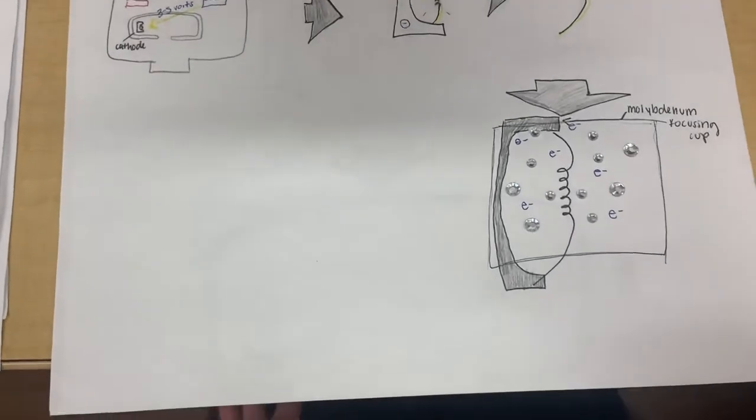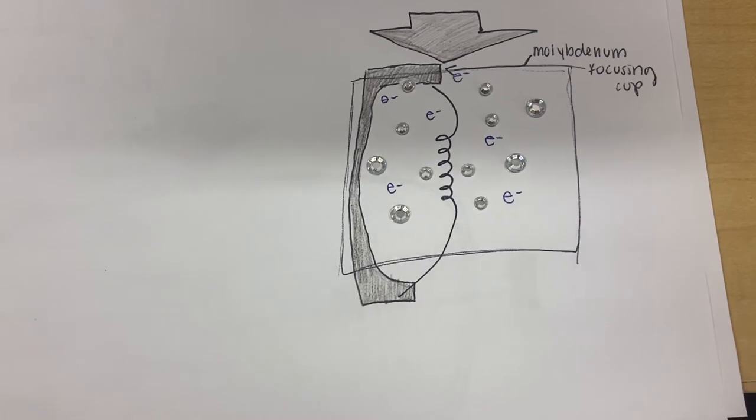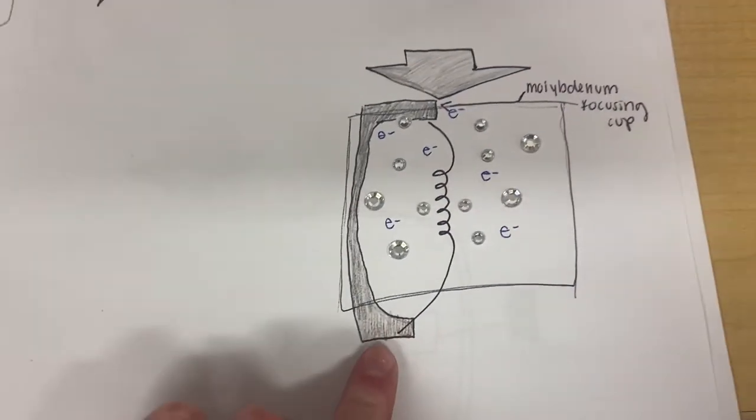And then, the electrons will stay hovering in an electron cloud around the tungsten filament in the molybdenum focusing cup.